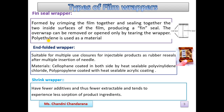The next is the end folded wrapper. This wrapper is formed by pushing the product into a sheet of overlapping film. It is suitable for multiple-use closures for injectable products, as rubber re-seals after multiple insertion of a needle.